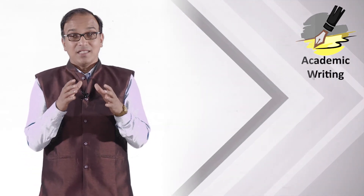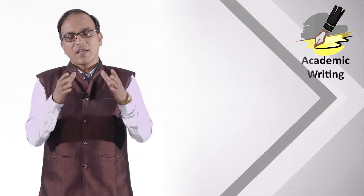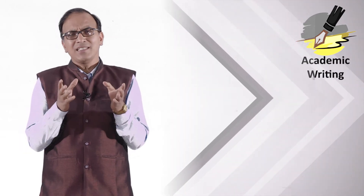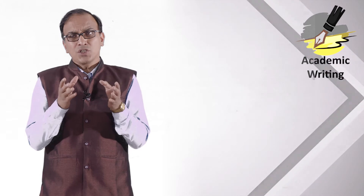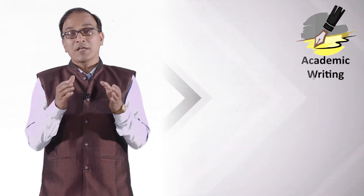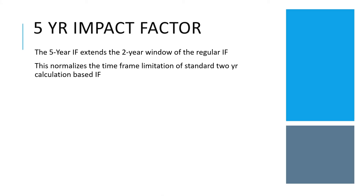The first journal metric in this module is the five-year impact factor. It is basically an extension of the two-year impact factor window to five years. This normalizes the time frame limitation of the standard two-year calculation-based impact factor. It is suitable for slow-moving areas of research where citation is slow and needs more time.